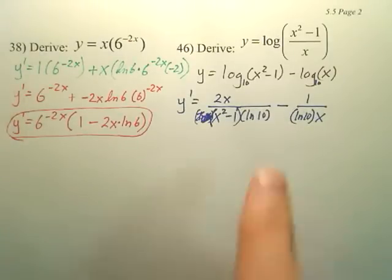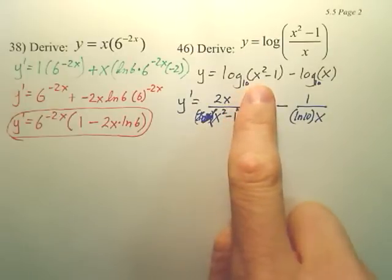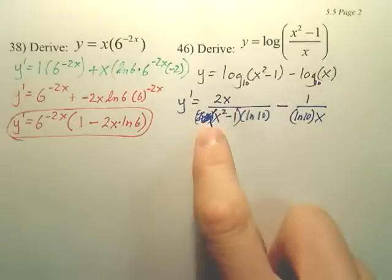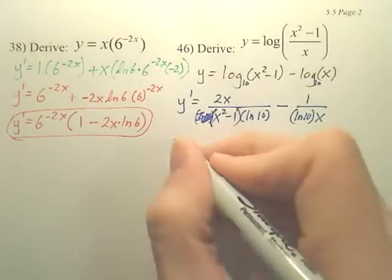So again, to derive a log, you basically treat it like a ln, except the base of the log, you need to put on the bottom as an ln of that value.